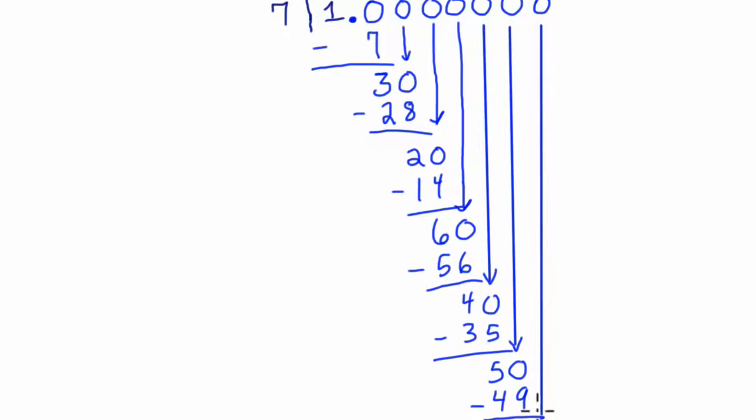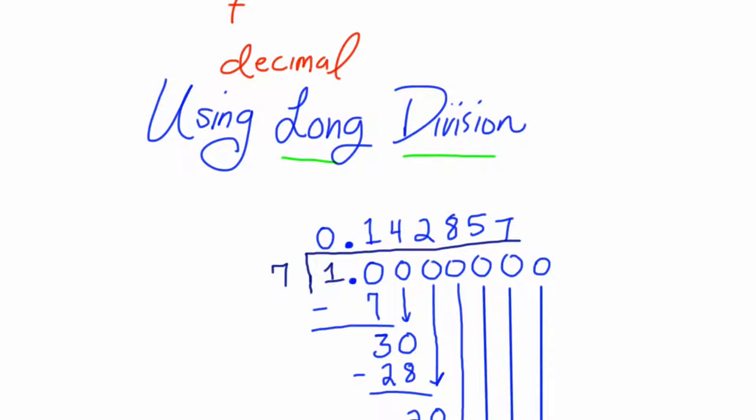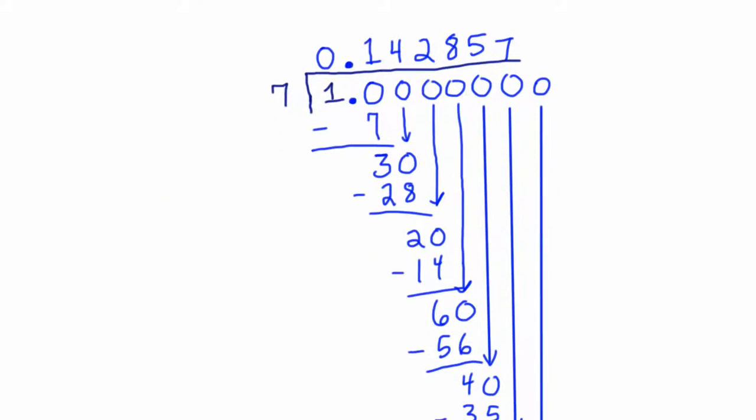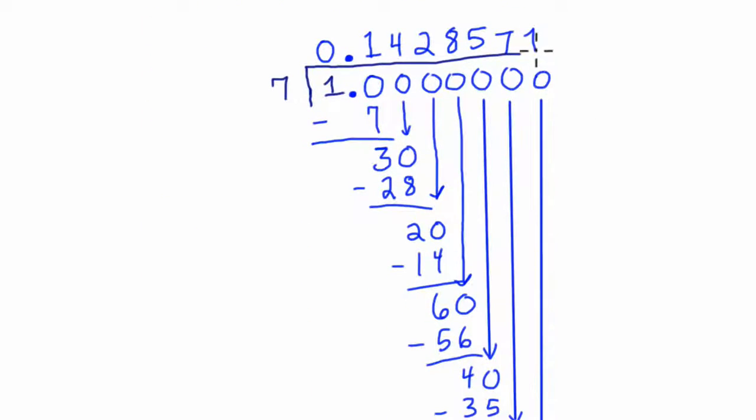And something nice is about to happen. 7 goes into 10 one time. So if we look back up here to our answer. Right? If we put another 1 here, we notice, oh, maybe this sequence is starting to repeat. I see a 1 and a 1. And it will repeat.